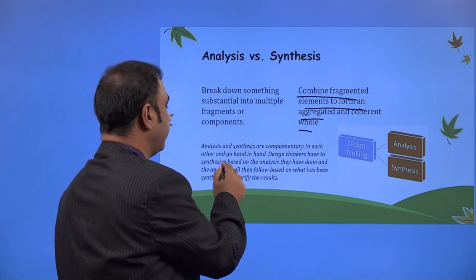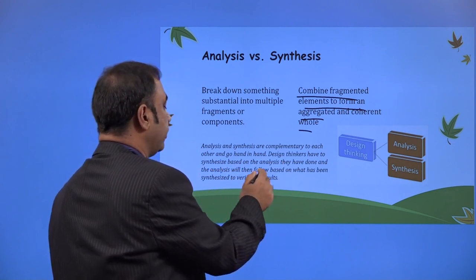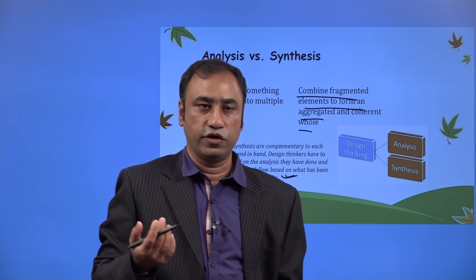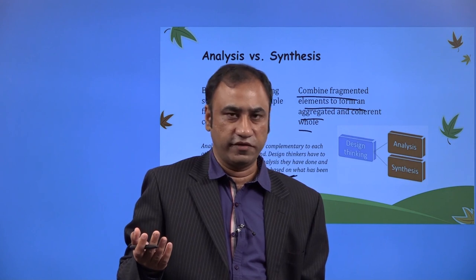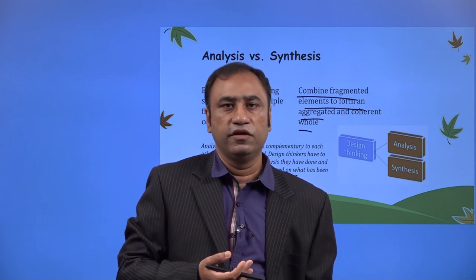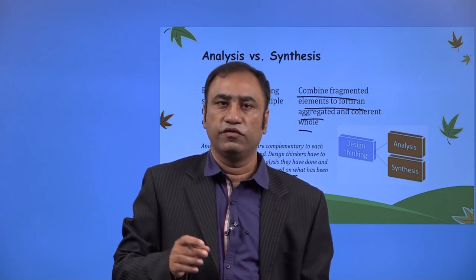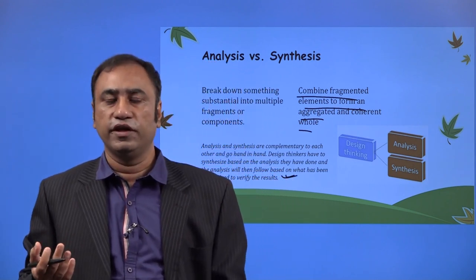Analysis and synthesis are complementary to each other and go hand in hand. Design thinkers have to synthesize based on the analysis they have done, and the analysis will then follow based on what has been synthesized to verify the results. This assembly line concept is applicable to companies like Pepsi and Coca-Cola. If you visit a Coca-Cola manufacturing setup, you will quickly see the assembly line process. Even at temples, you see different counters for different things — you go to one counter for Prasad, another for a token, and then you follow the queue to reach the idol. This concept is used universally in different ways.